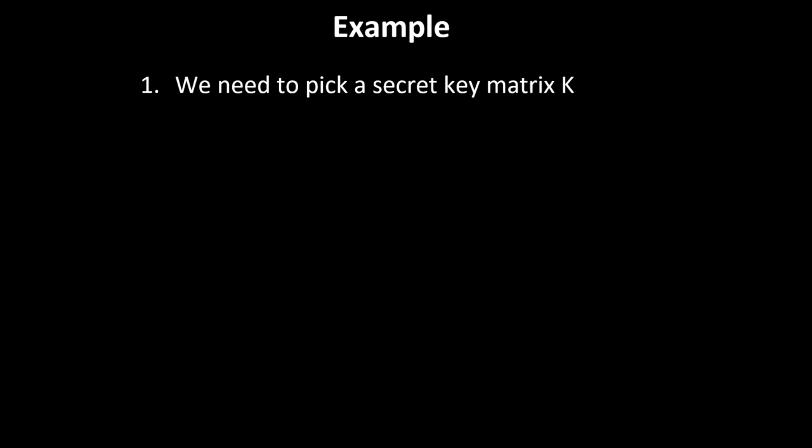Let's do an example. Hopefully it will make things more clear. The first thing we have to do is pick a secret key matrix K. Let's say we pick K = [3, 3; 2, 5]. The next step is that we need to have a message. Let's say the message is HELP.